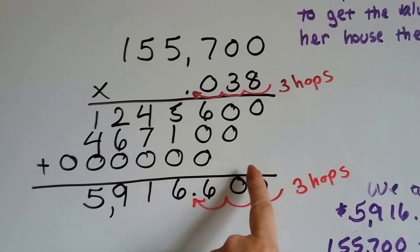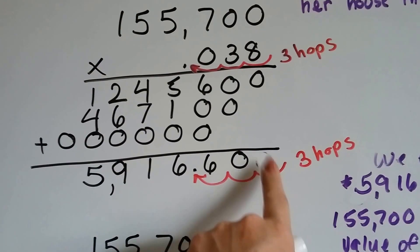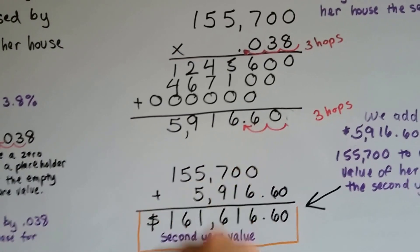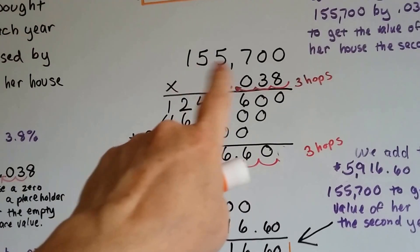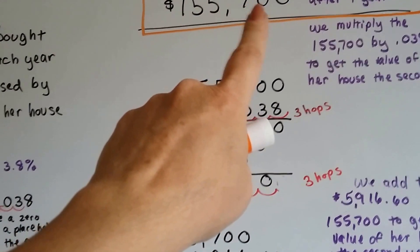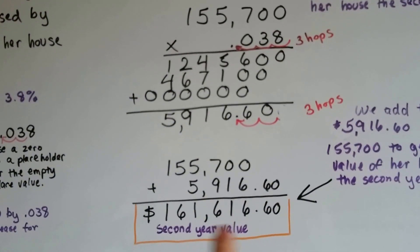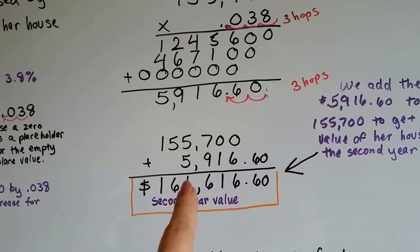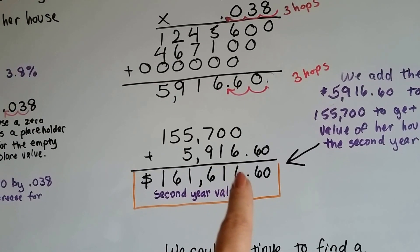And we see that this zero is not necessary because we're talking about money, right? So we have $5,916.60 that we can add to the one-year value, and that'll give us the two-year value. So now the second-year value is $161,616.60.